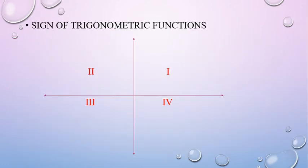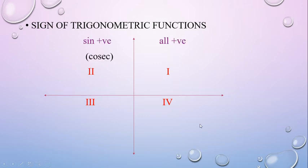If we look at the sin plane, 4 quadrants are divided: the second quadrant, the third quadrant, and the fourth quadrant.